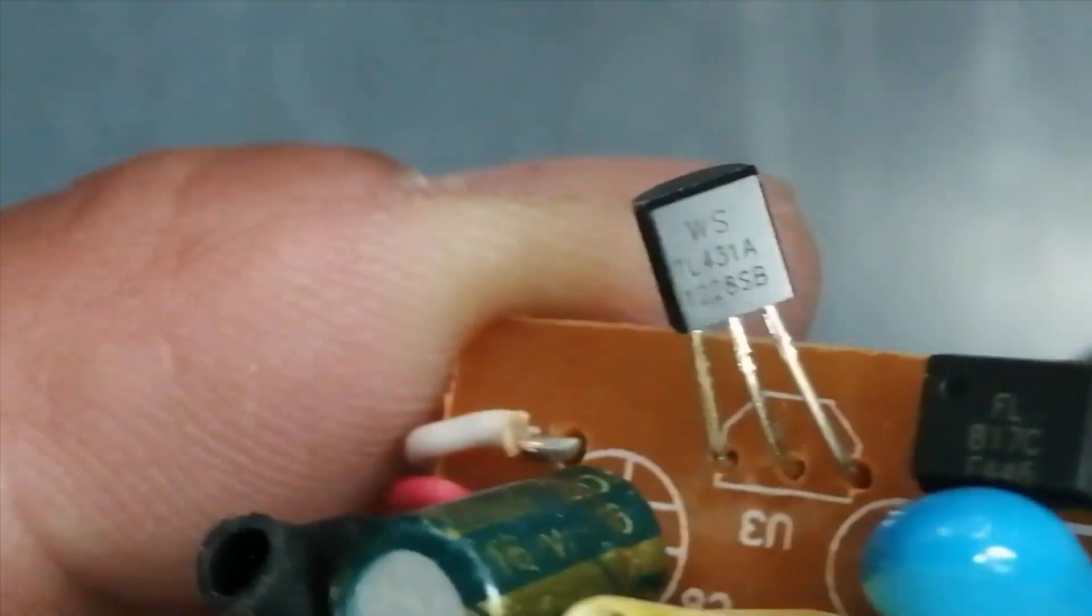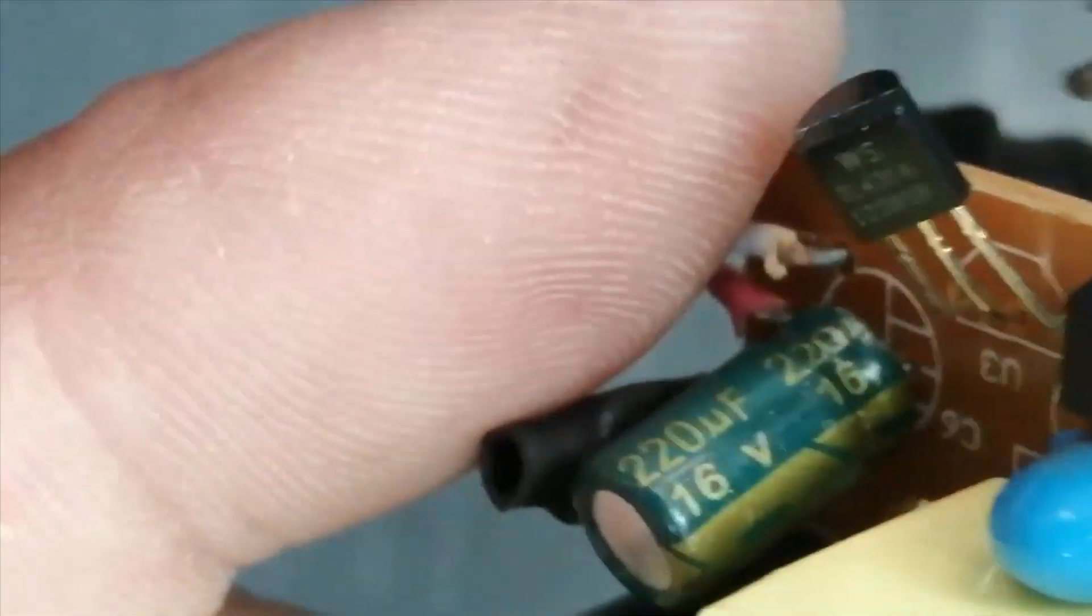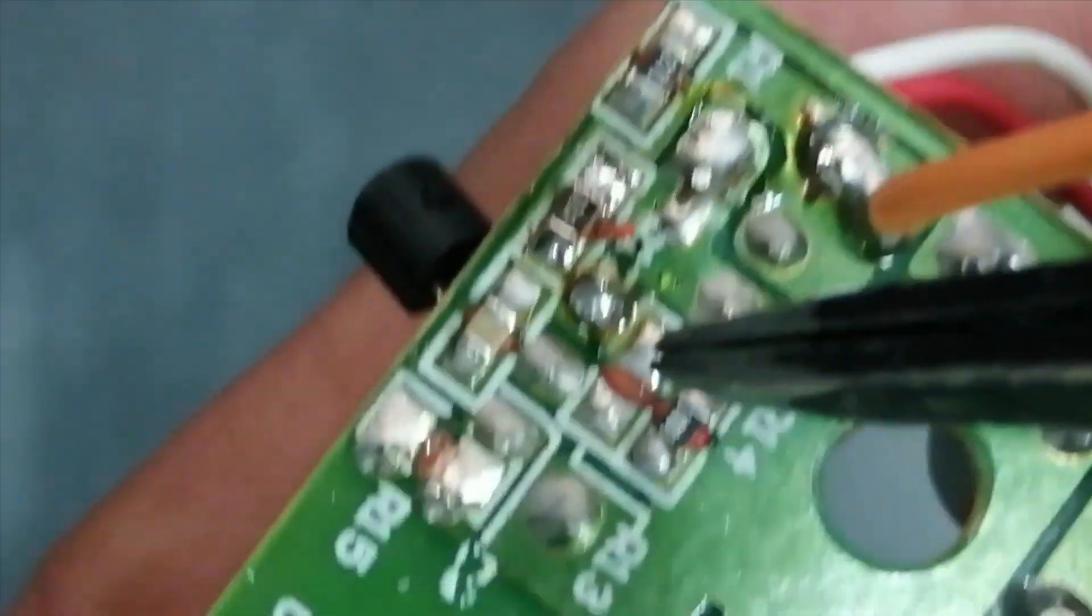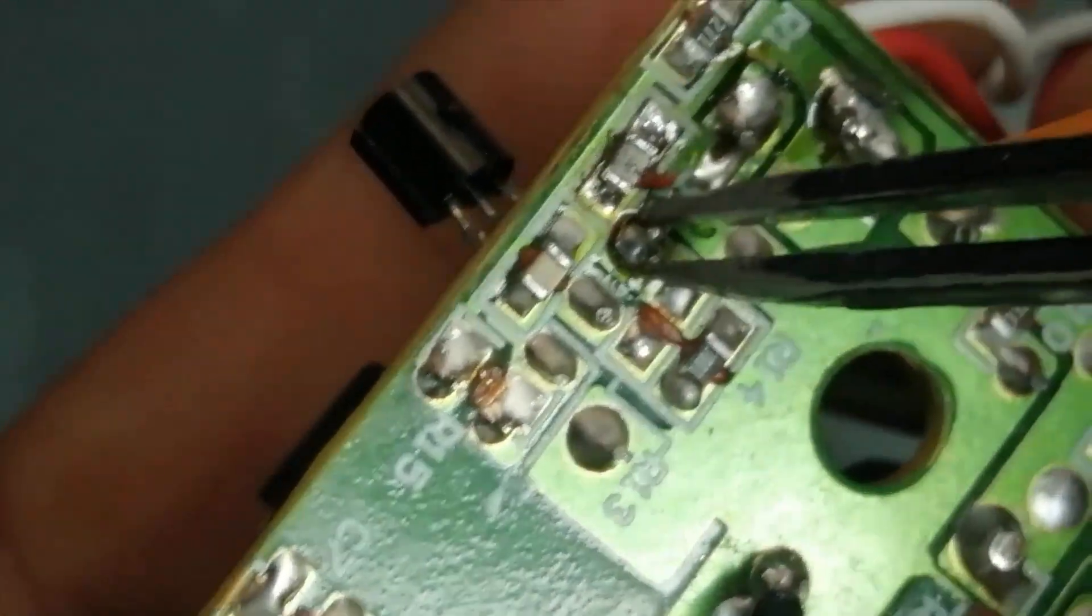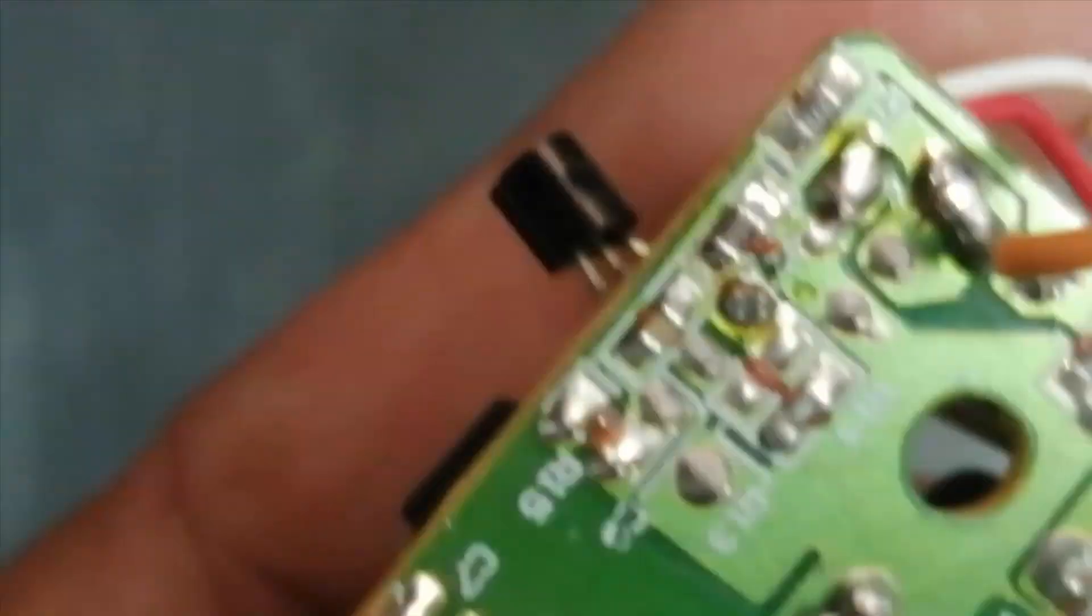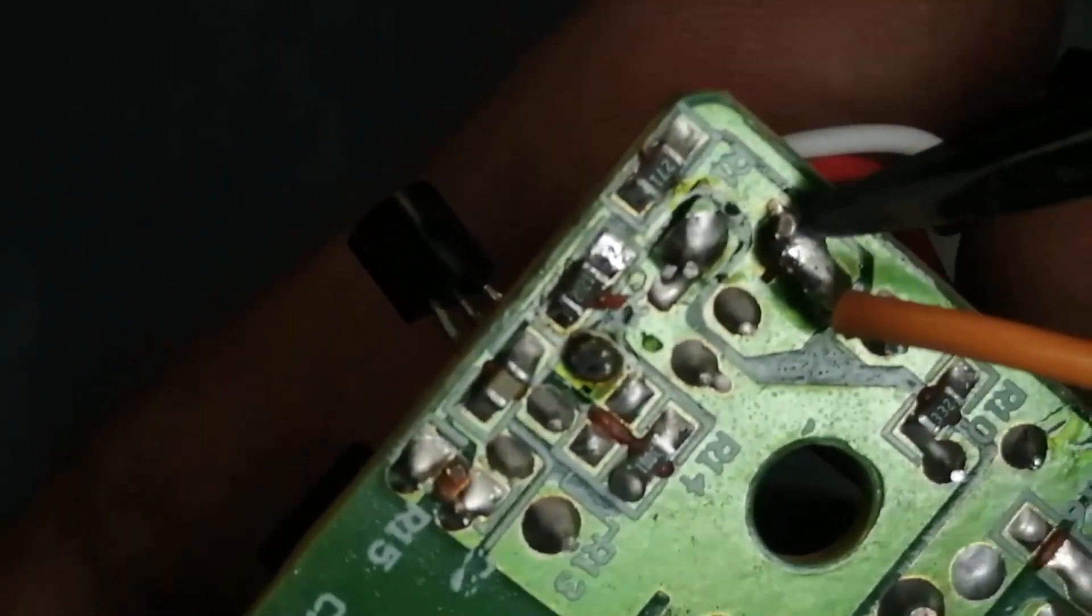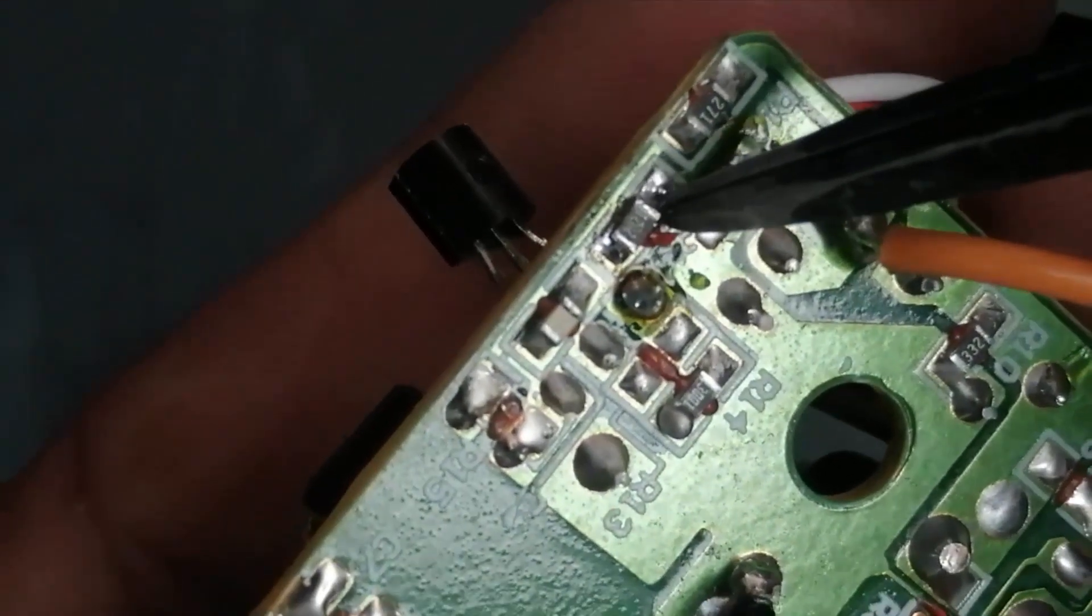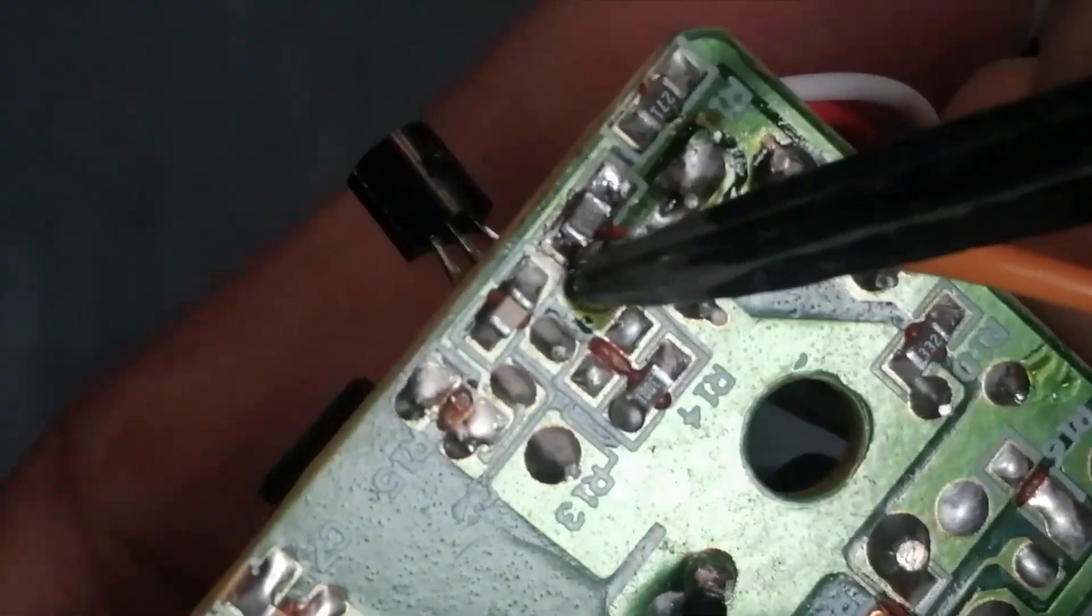A resistor between pin number one and the positive voltage. This is the positive voltage line, and this resistor is connected to pin number one. So we will remove this resistor.